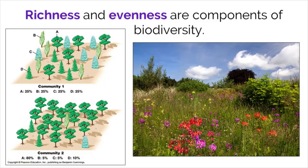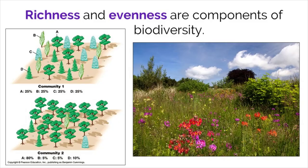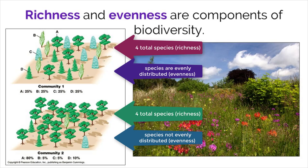Scientists measure biodiversity by two main components: species richness and species evenness. Species richness describes the number of different species in an area — the more species there are, the greater the richness. Species evenness describes the relative abundance of the different species in an area. As you can see in this example, communities 1 and 2 have the same species richness because they both have four total species, but different species evenness, as the first community shows similar abundance between species and the second has a higher percentage of species A and low percentages of the other three.